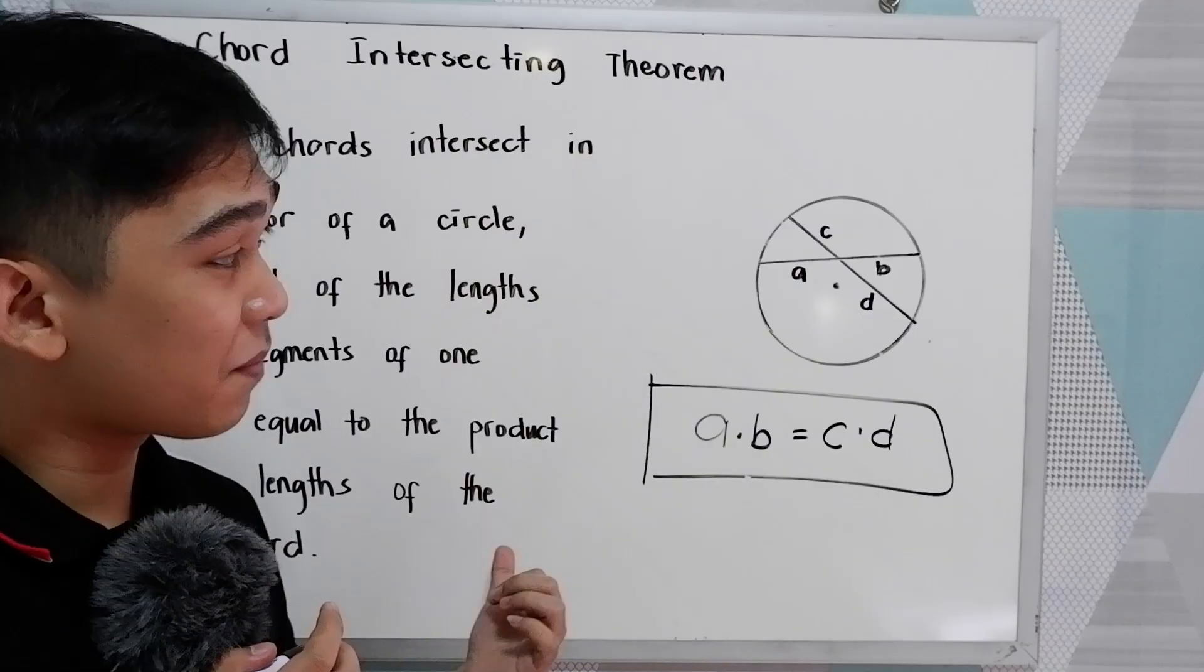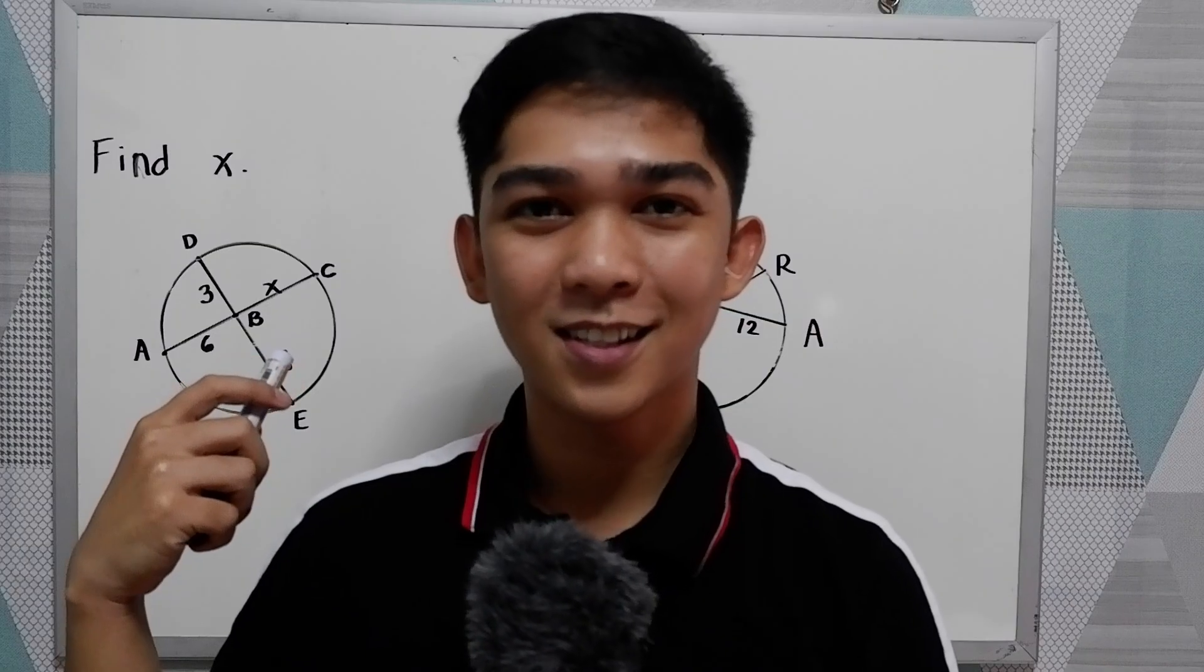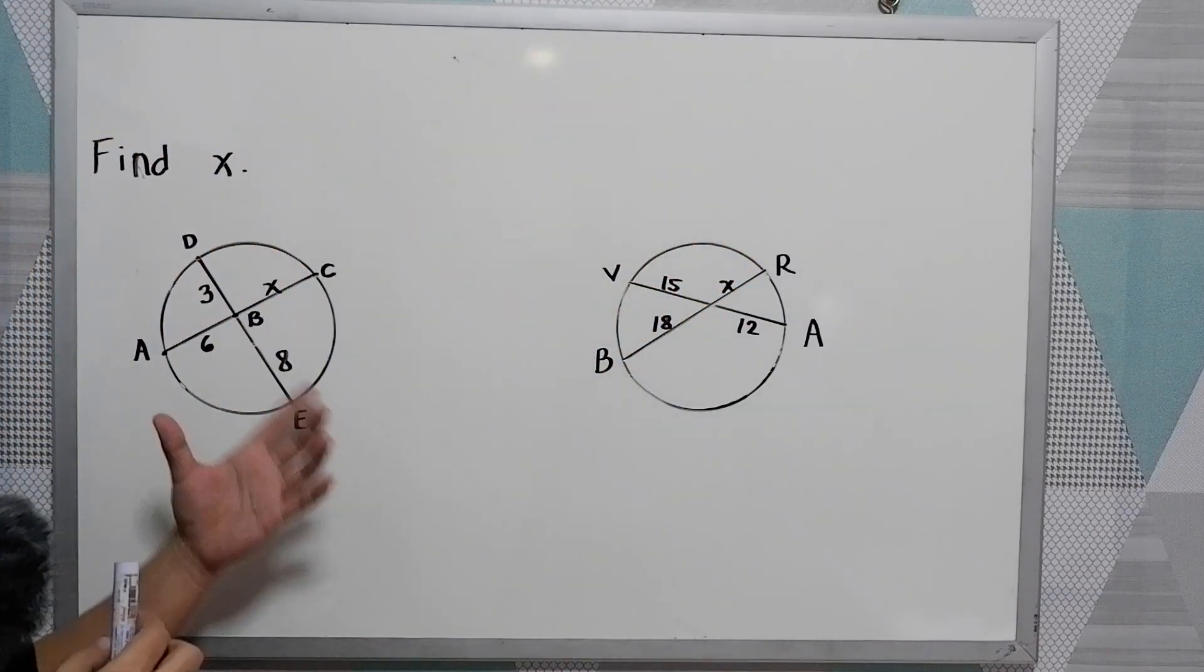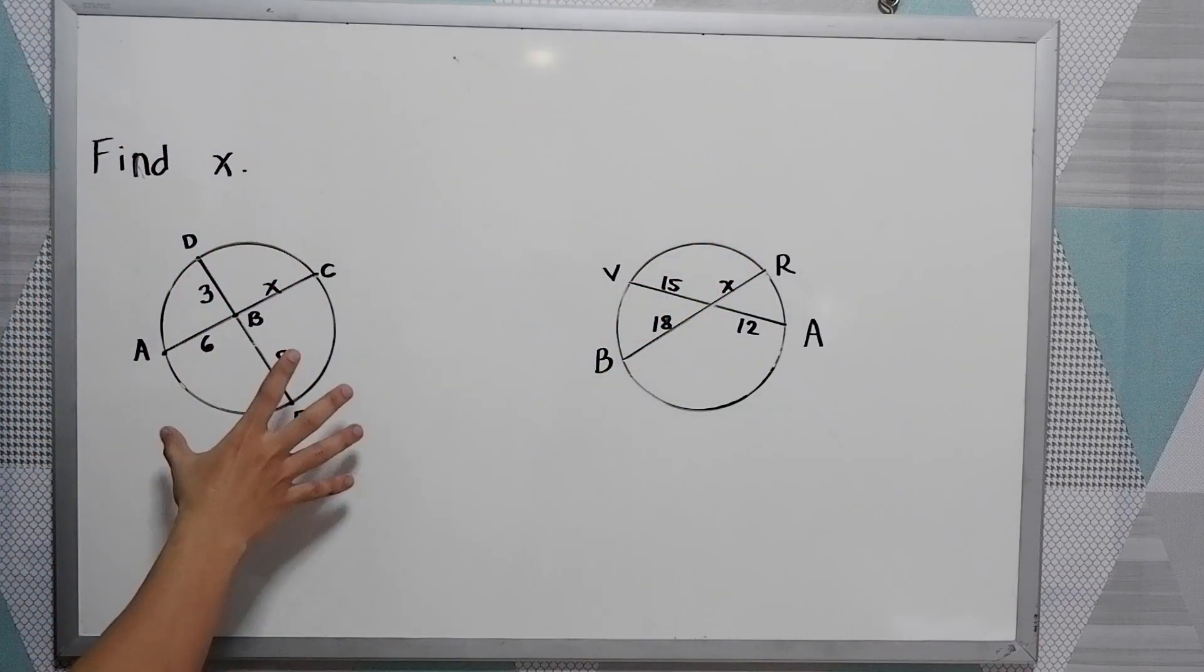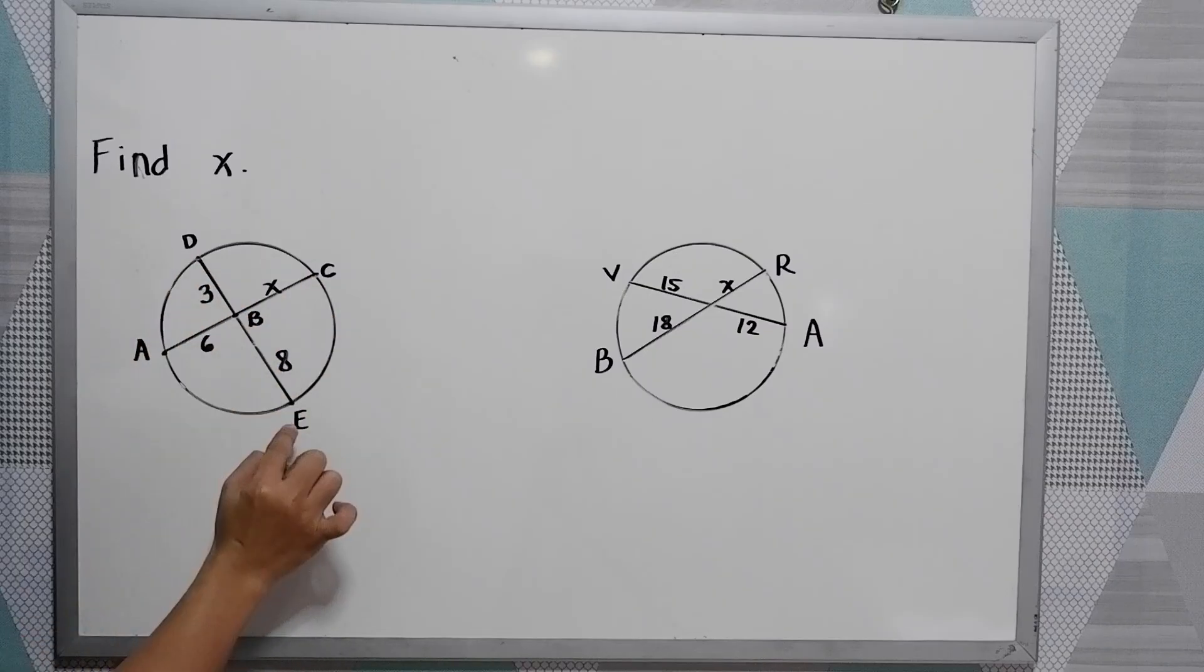Now, let us apply this theorem to solve some problems. Find X given the circle and the chords. We have A, C and B, E.